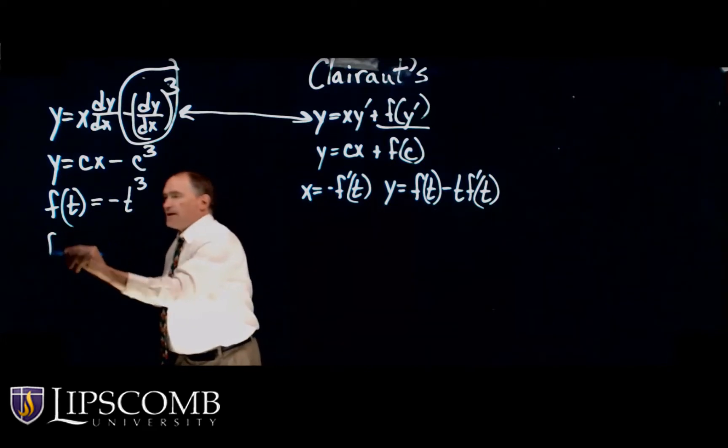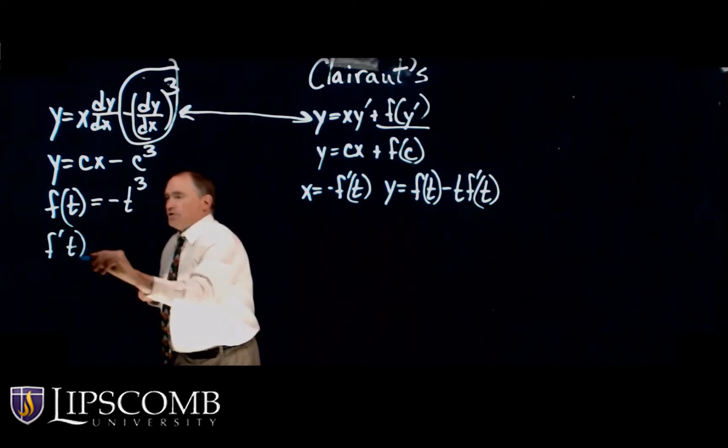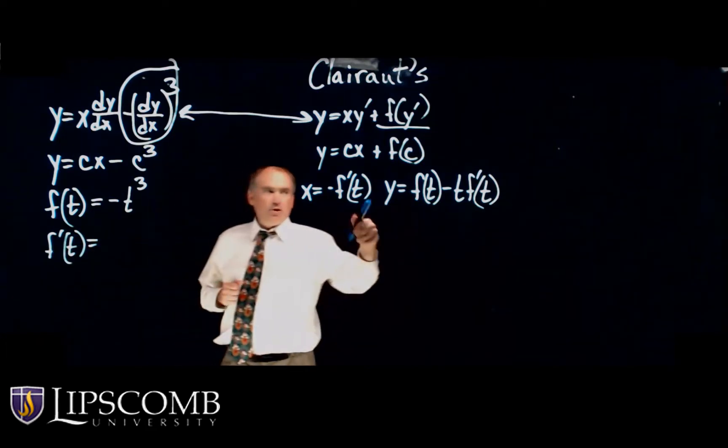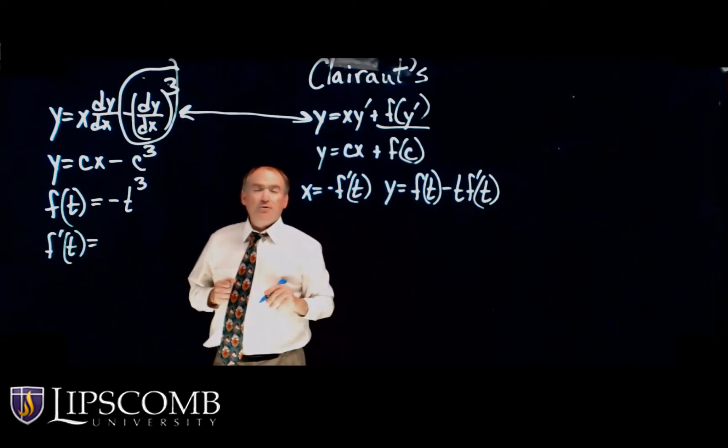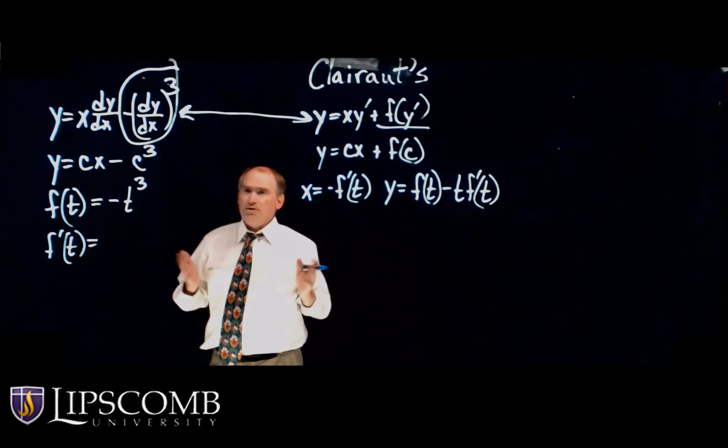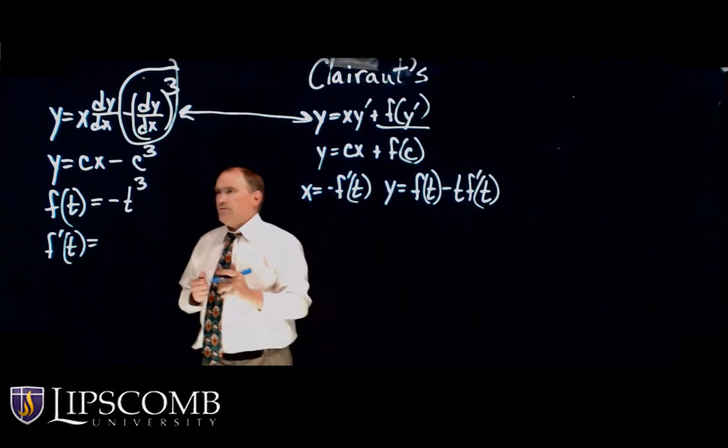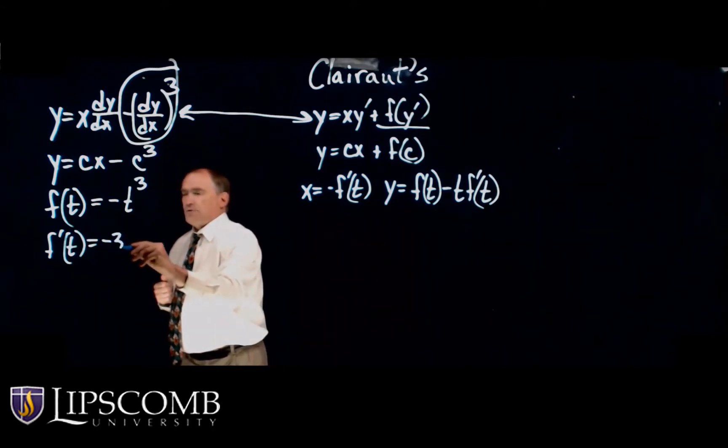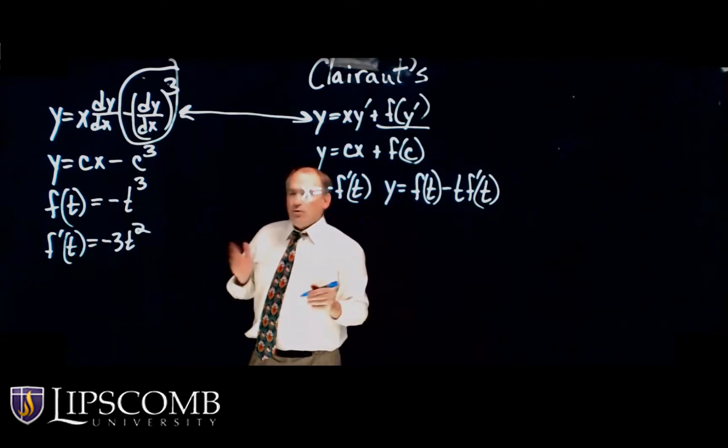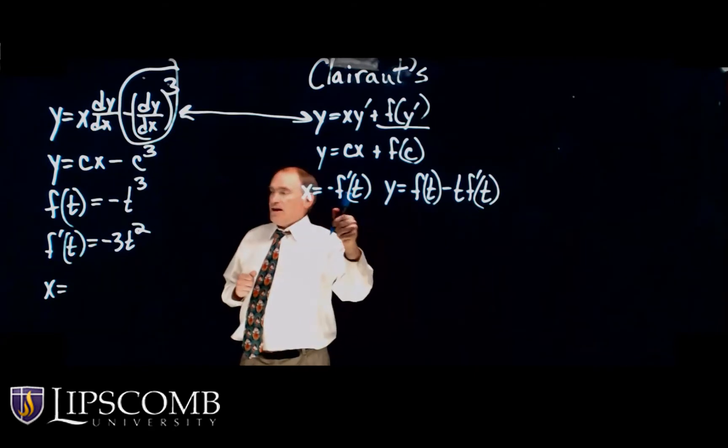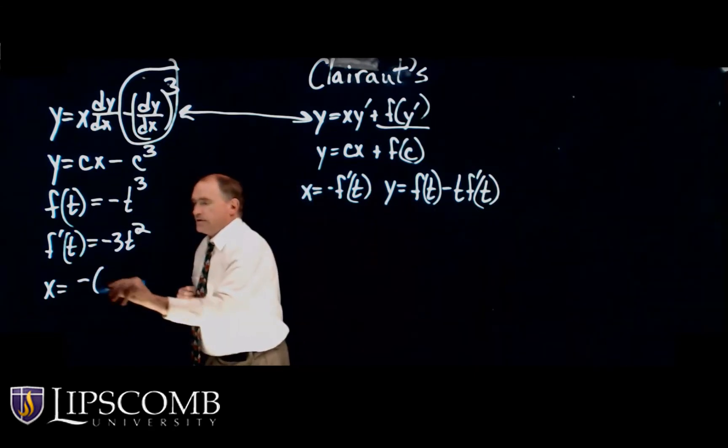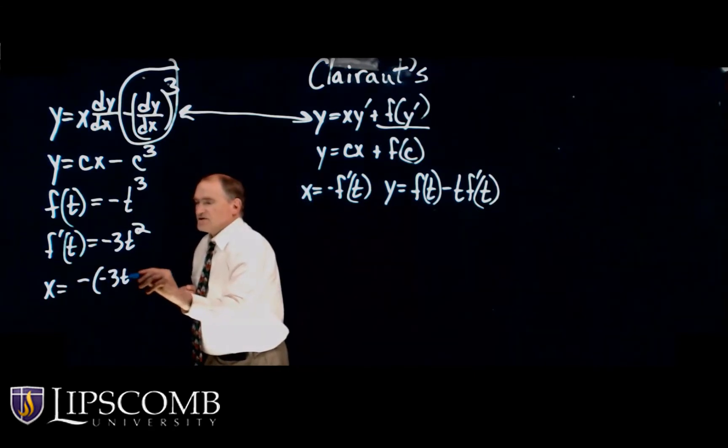So let's go ahead and find F prime of T because we're going to use it in our formula for finding the singular solution. And by the way, if you remember, this is called a parametric form, Calculus 2 parametric form. So this would be negative 3T squared. So X would be negative negative 3T squared, so that would be 3T squared.